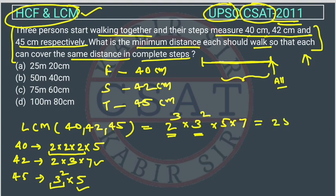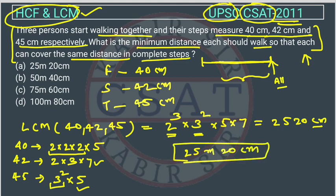Multiplying these together gives 2520 centimeters. Converting to meters, this is 25 meters and 20 centimeters. So the answer is option A. This becomes very easy once we understand it is an HCF and LCM problem.